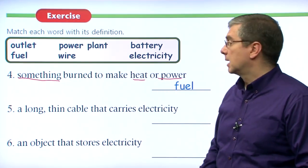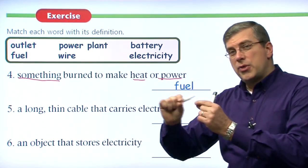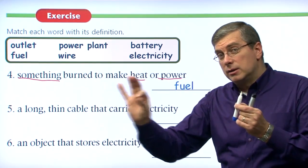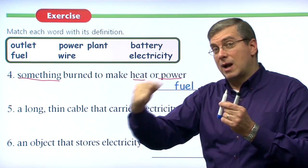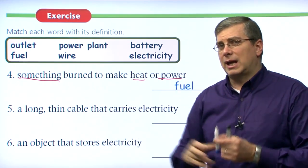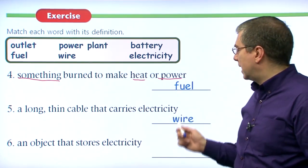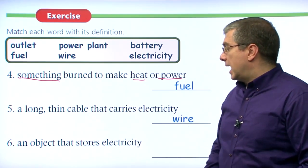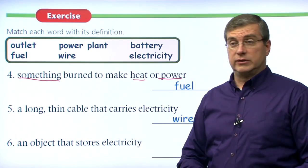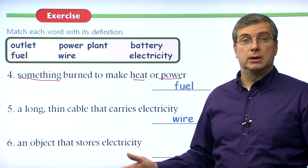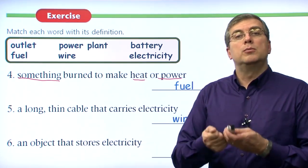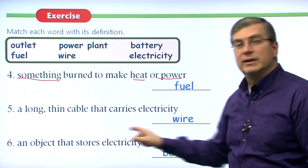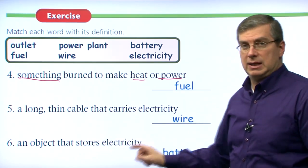Number five: a long, thin cable that carries electricity — it's made of two parts. One is metal and the other is plastic around it to protect it. The metal is what carries the electricity. That is called a wire. Number six: an object that stores electricity. If there's no outlet around and you go away from one, you keep electricity in a battery. You store it in a battery.